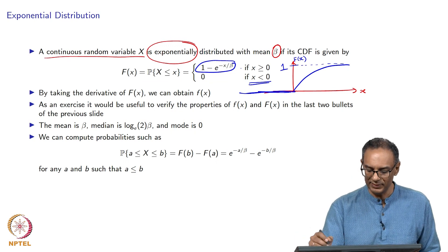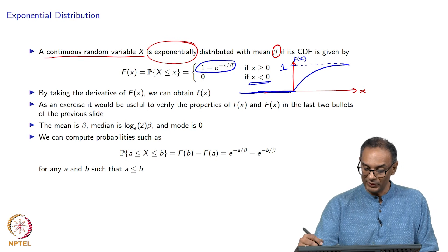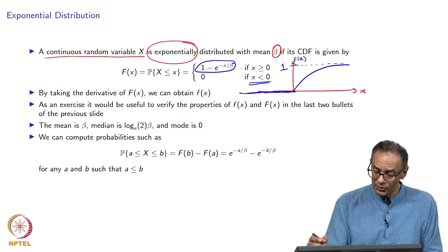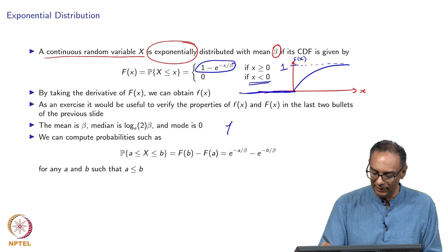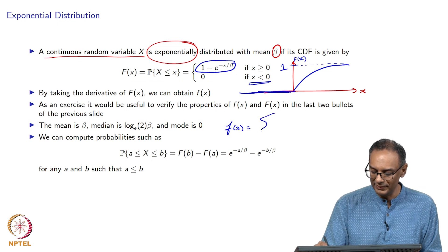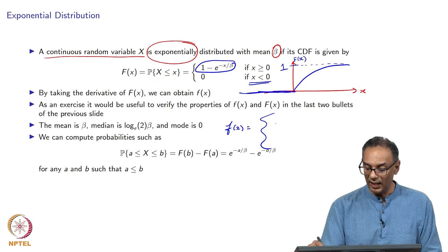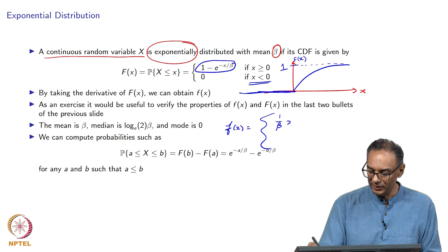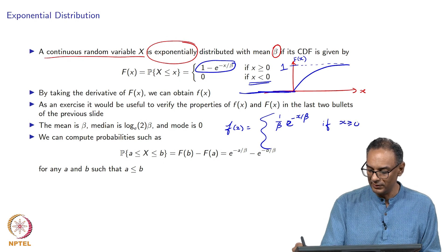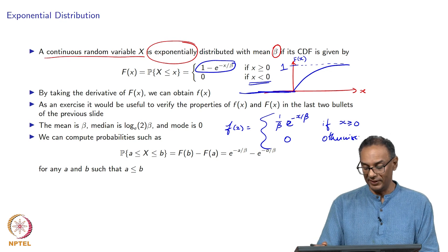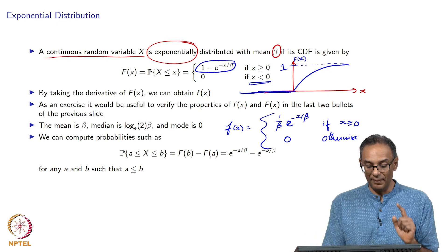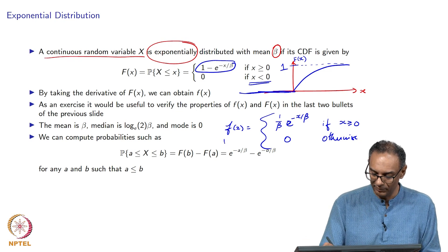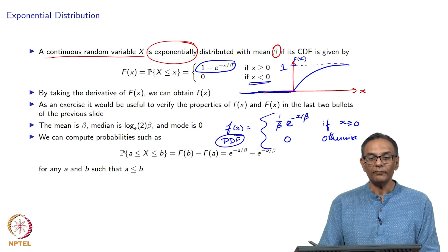If you take the derivative of F(x), you get the probability density function f(x). Taking that derivative gives f(x) = (1/β) e^(−x/β) for x ≥ 0, and 0 otherwise. All I did was take the first derivative of the uppercase CDF F(x) to get the lowercase PDF f(x).